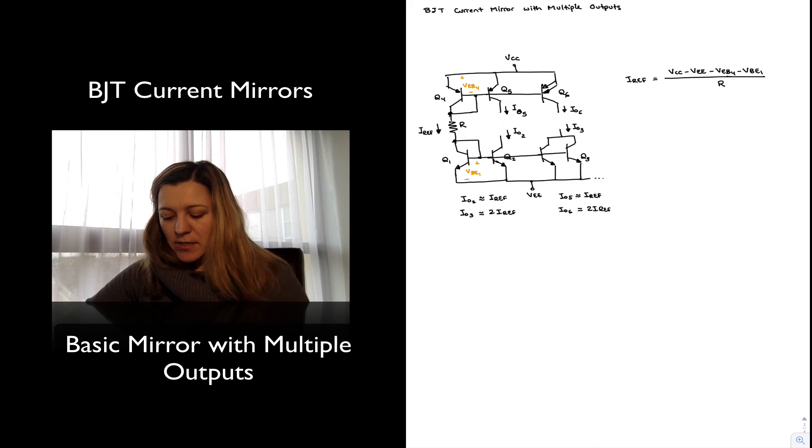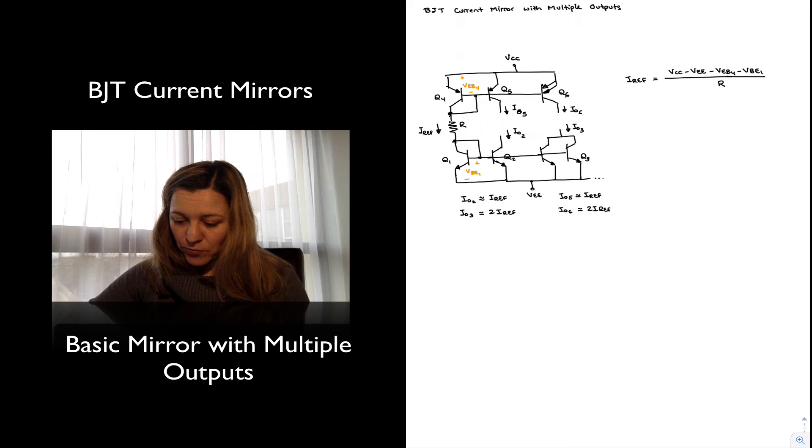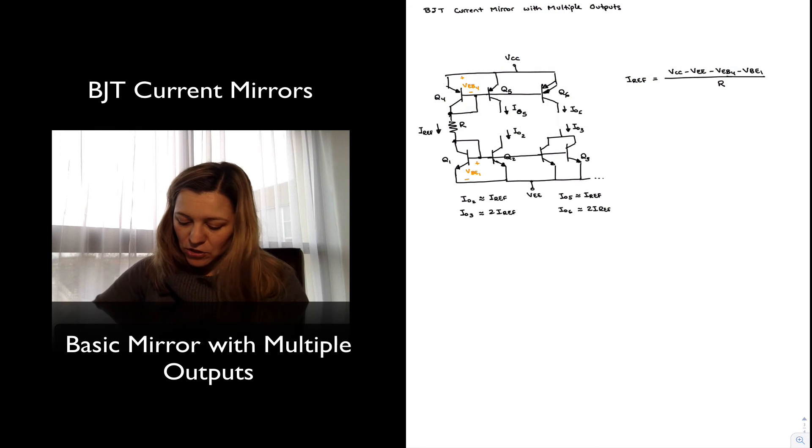One thing to notice is that as we keep increasing the number of stages or the number of output currents, we're essentially loading our circuits. What do I mean by that? Well, we've said in the case of the simple current mirror, there is some current that goes into the base of the transistor, right? And we assume, let's imagine the transistors are well-matched. We have some current going in here, which is essentially providing the base currents for those transistors. In the case of a simple current mirror, then we only have two base currents, IB1 and IB2. As we keep increasing the number of stages, now we also have the base current going into transistor Q3.